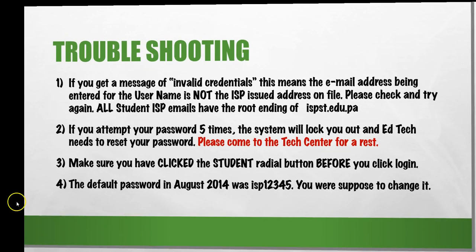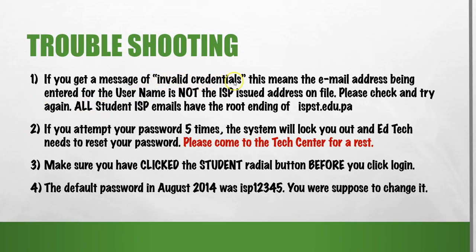We do have a few troubleshooting tech tips for you. If you get the message that says invalid credentials, that means the email address you've put in the system is not your ISP issued one on file. Please check it, make sure the spellings are correct, and that you have the root ending of ispst.edu.pa. Also, if you do five attempts and they do not work, you'll be locked out of the system. To be unlocked, you'll need to come up to the Tech Center to get a reset. Also make sure you've clicked the student button on the radial at the bottom, which we'll review when we go live. The default password back in 2014 was ISP12345 — though you were supposed to change it, if you didn't, you may still be able to use this password. Remember, five failed attempts and you'll be locked out and we'll need to reset your account.